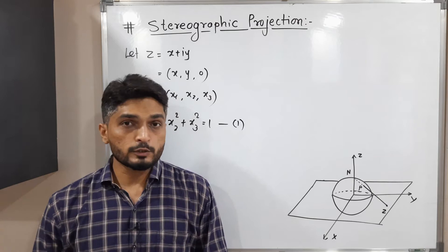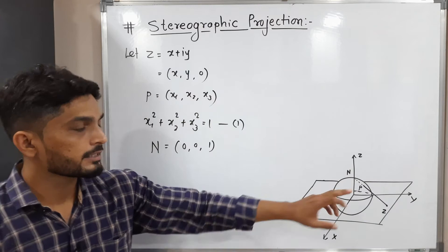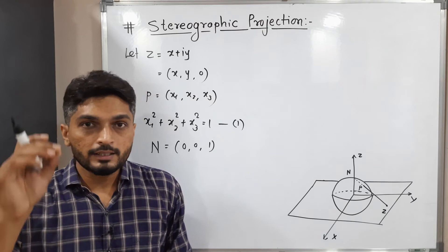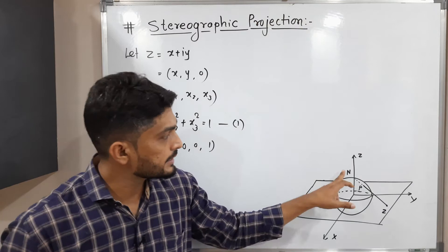We also have the north pole. The north pole is written as (0, 0, 1) — it lies on the z-axis, and since it is a unit sphere with radius one, it cuts the z-axis at (0, 0, 1). That is our north pole. Now, point P lies on the line joining N and z.